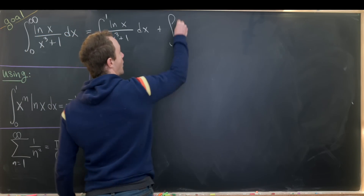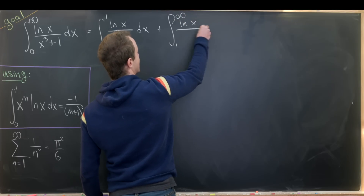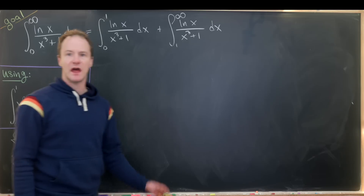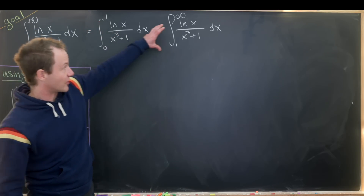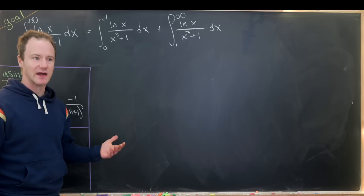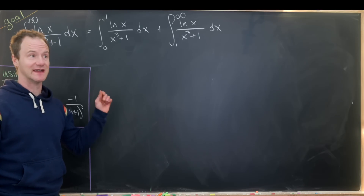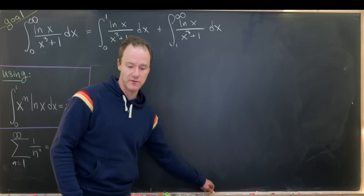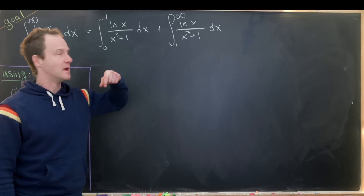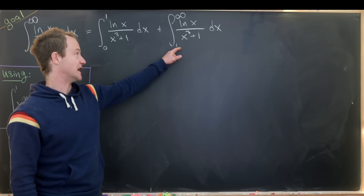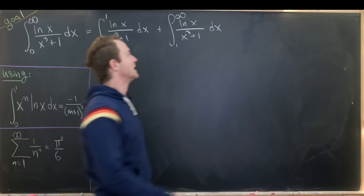We'll start by splitting the main integral into two: the integral from 0 to 1 of ln(x) over x cubed plus 1 dx, plus the integral from 1 to infinity. The key observation is that the region from 1 to infinity can be inverted to 0 to 1 under the substitution x maps to 1 over x. Since the 1 to infinity region is infinite, we'll invert it back to 0 to 1 — that's exactly what we'll do.